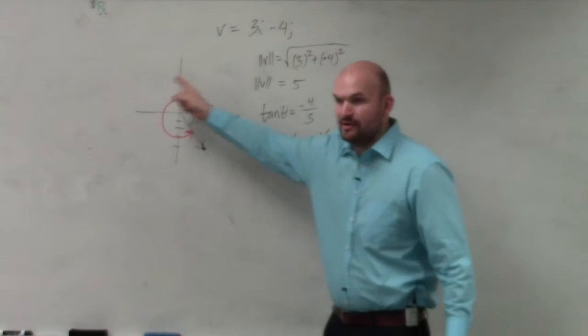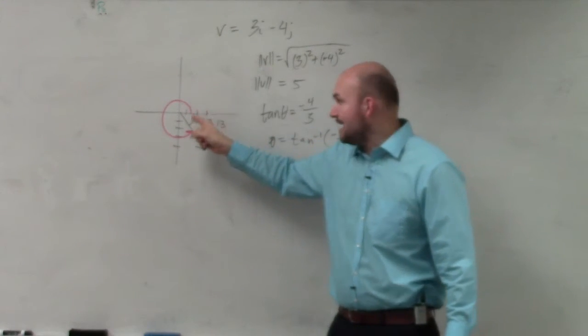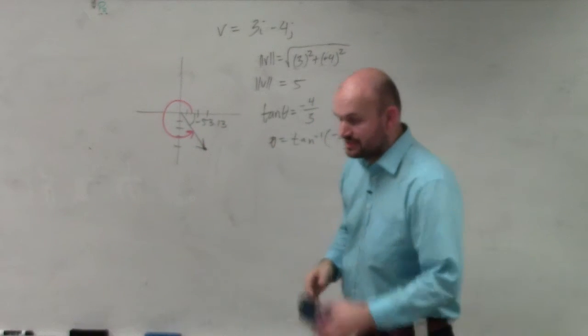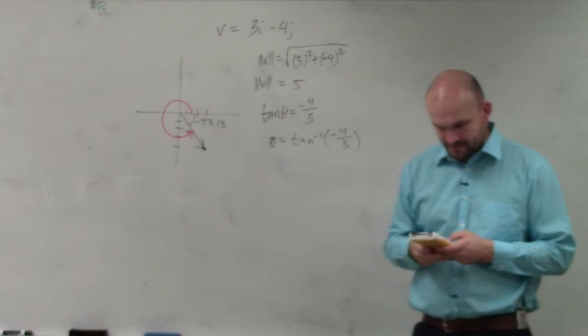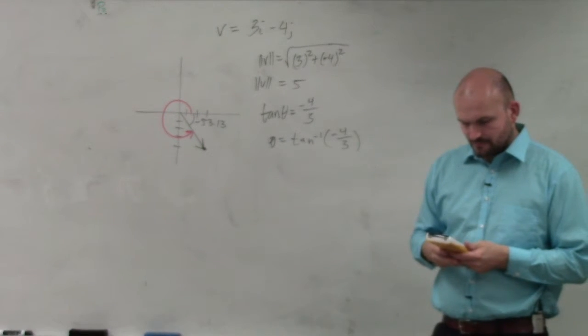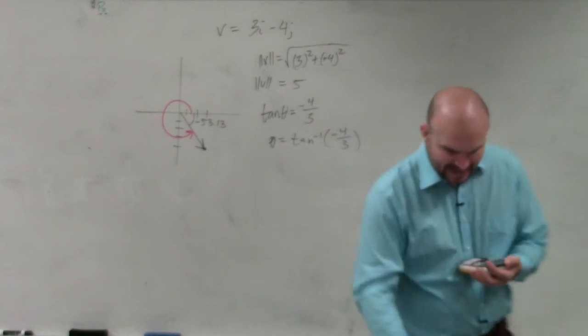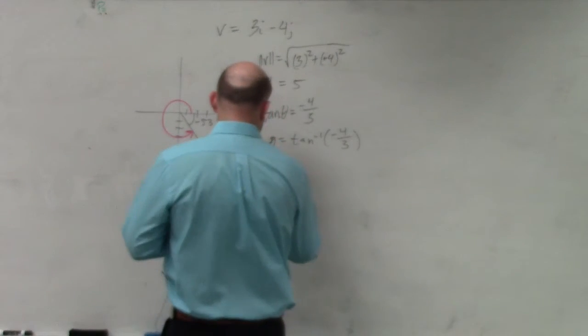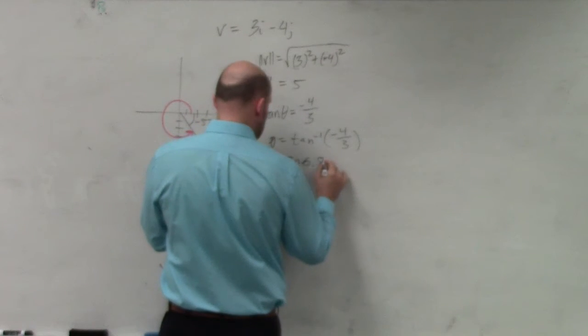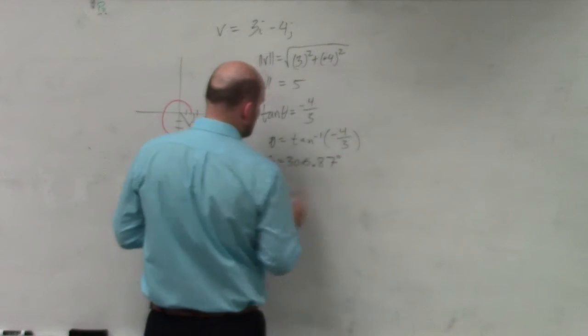So therefore, if all the way around in a circle is 360, but I want to find 360 minus this 53, all I do is take 360 degrees minus my answer. And I get an angle of 306.87 degrees.